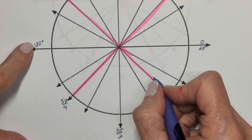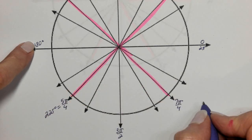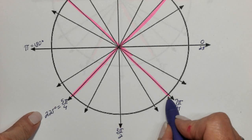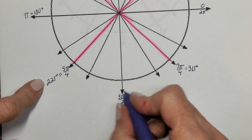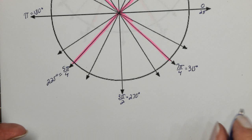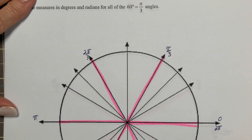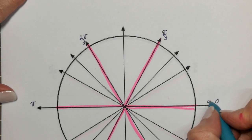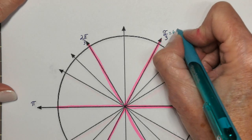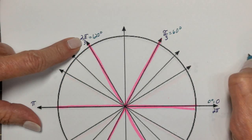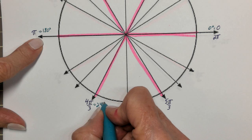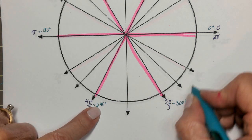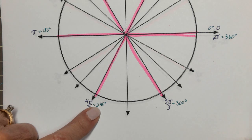Adding another 45 degrees to 180 gives us 225 in the third quadrant. Adding another 45 degrees gives 270, and then 315 degrees. Now for the pi over 3s — the 60 degree angles: starting at 0 degrees, then 60, 120, 180. Adding 60 more gives 240, then 300, then 360 degrees. Those are all the 60 degree angles.